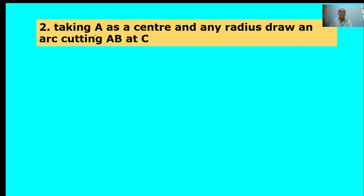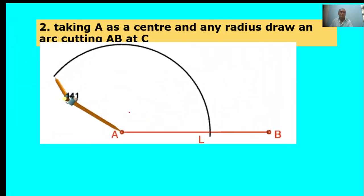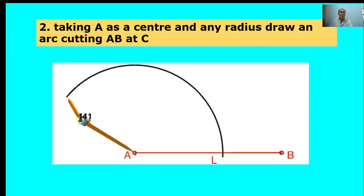Second point: Take A as center and any radius, draw an arc cutting AB at C. Here, center point A. Take any radius, draw one arc.